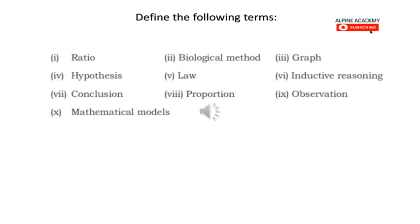Next we have to define the following terms: ratio, biological method, graph, hypothesis, law, inductive reasoning, conclusion, proportion, observation, and mathematical models — quickly, in 2 to 3 lines each. Ratio: ratio is a comparison of two values expressed as a quotient of the first and second values.